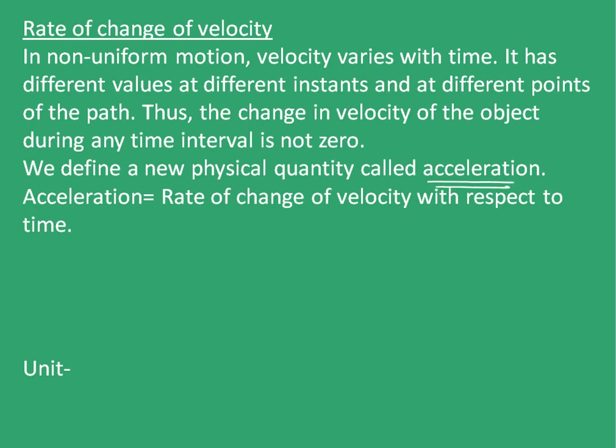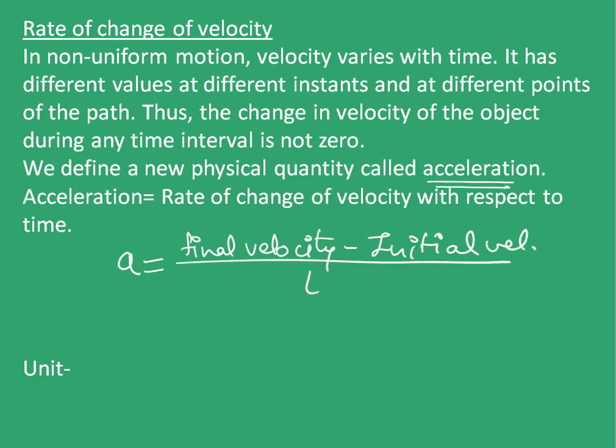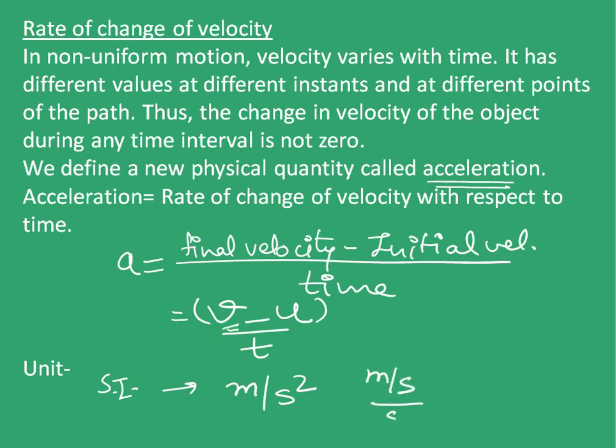Acceleration is equal to rate of change of velocity with respect to time. That is, acceleration a is rate of change of velocity, final velocity minus initial velocity upon time taken, which is v minus u upon t. The SI unit of acceleration is meter per second square. Because the unit of velocity is meter per second, and then again we divide it by time second, it becomes meters per second square.